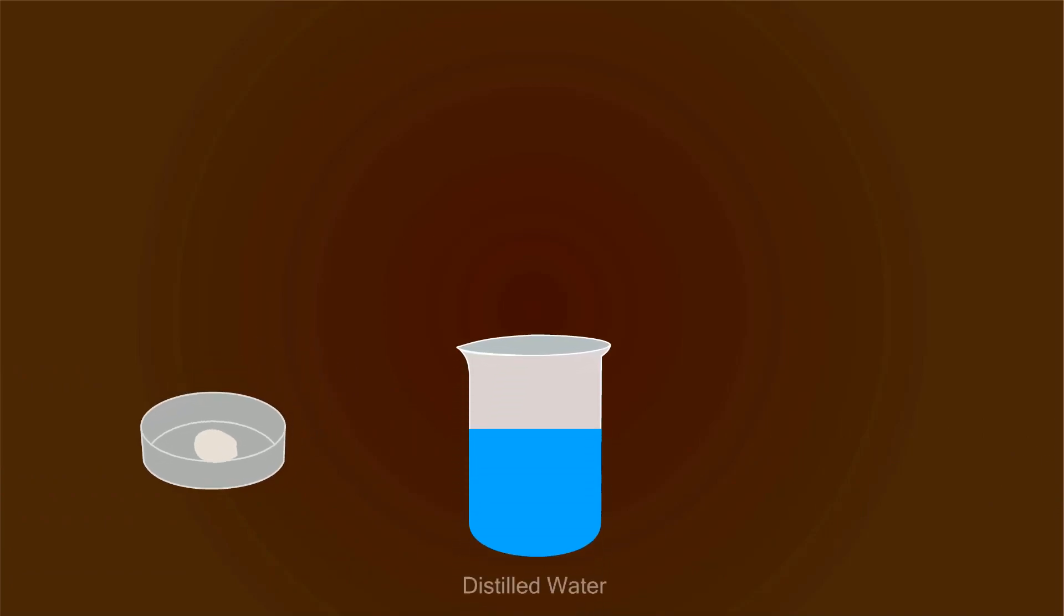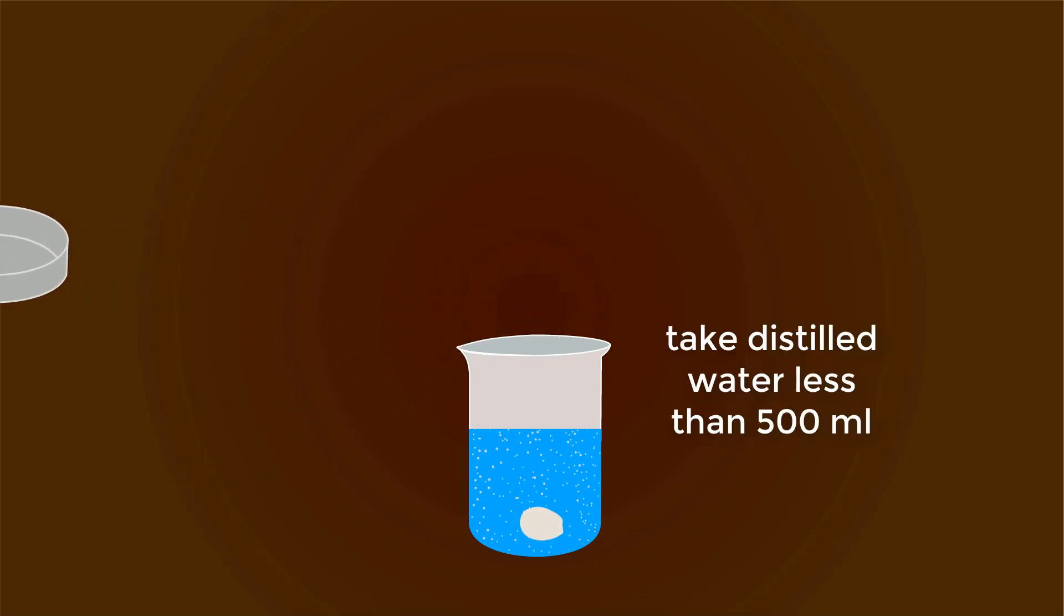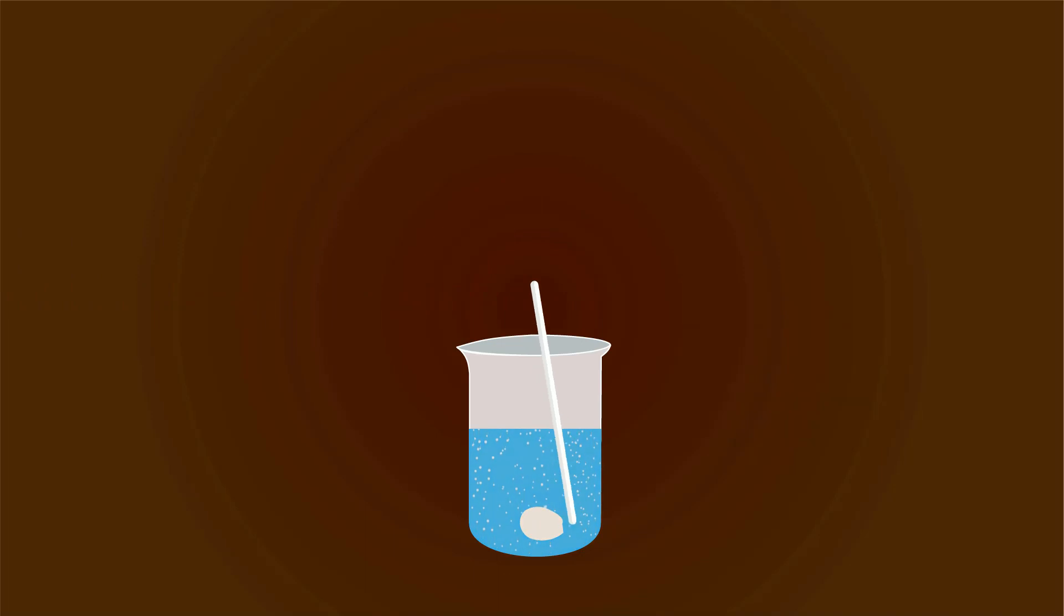Now take water in a beaker up to 500 milliliters and you can start adding sodium thiosulfate. Don't forget to mix it well to make a homogeneous mixture.